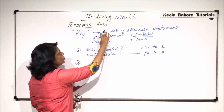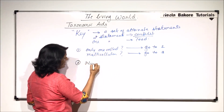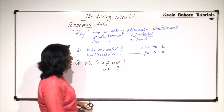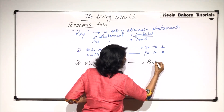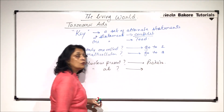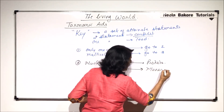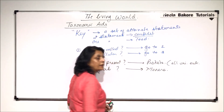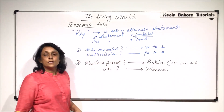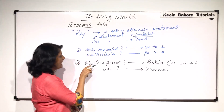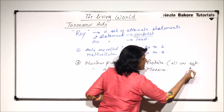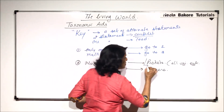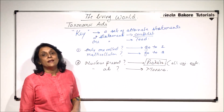Here again there is a set of two statements. First, nucleus present — it's a question — or nucleus absent. If nucleus is present, it is Protista. And if nucleus is absent, then we place it in Monera. Protista is a group which includes all unicellular eukaryotes. Because the nucleus is present, it is eukaryotic and the organism is unicellular. So we have reached the conclusion that the organism can be placed in Protista.